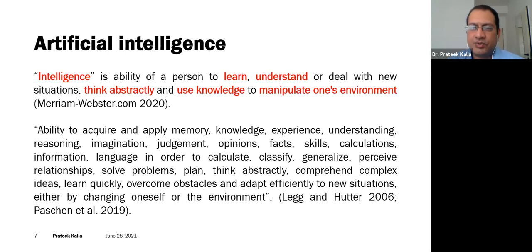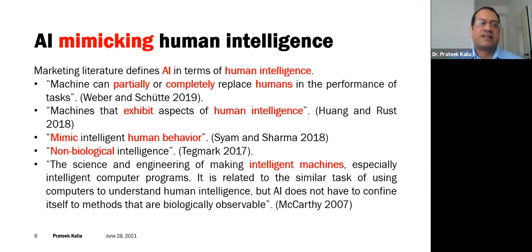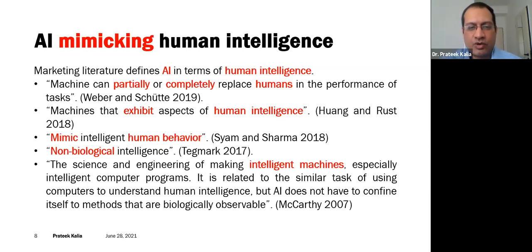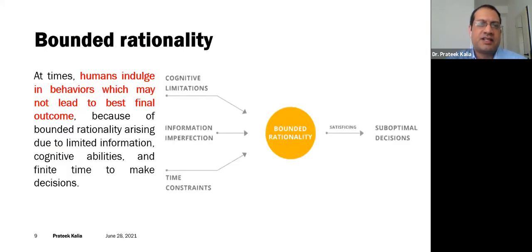Scientists believe that artificial intelligence can be compared to human intelligence on two levels: one where AI is equivalent to human intelligence, and another where AI is exceeding human intelligence. For AI equivalent to human intelligence, different definitions describe it as a machine that can partially or completely replace humans, mimic intelligent human behavior, or represent non-biological intelligence. However, with human intelligence there is the problem of bounded rationality — decisions are sub-optimal because of certain limitations.